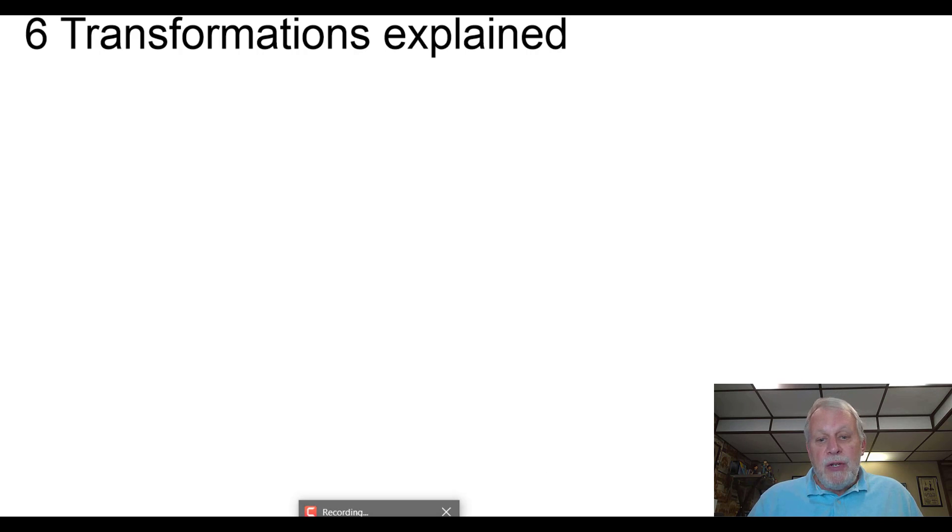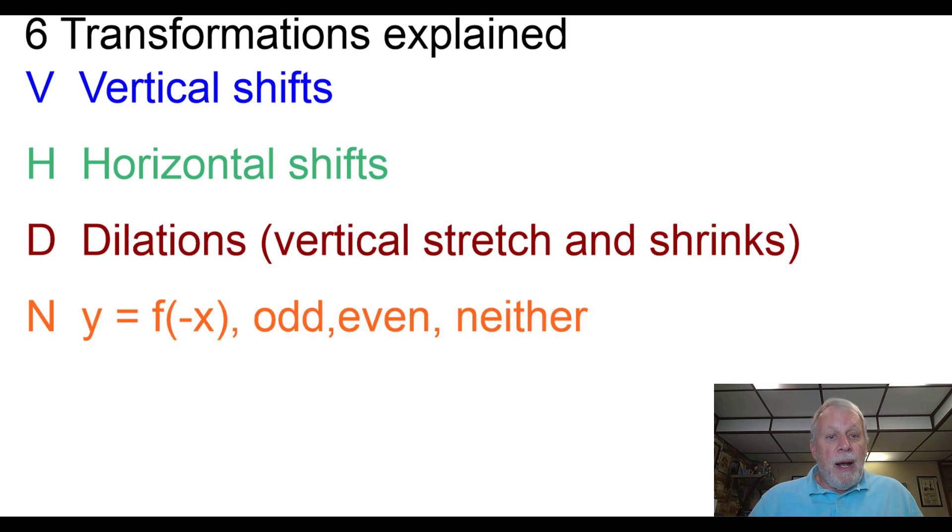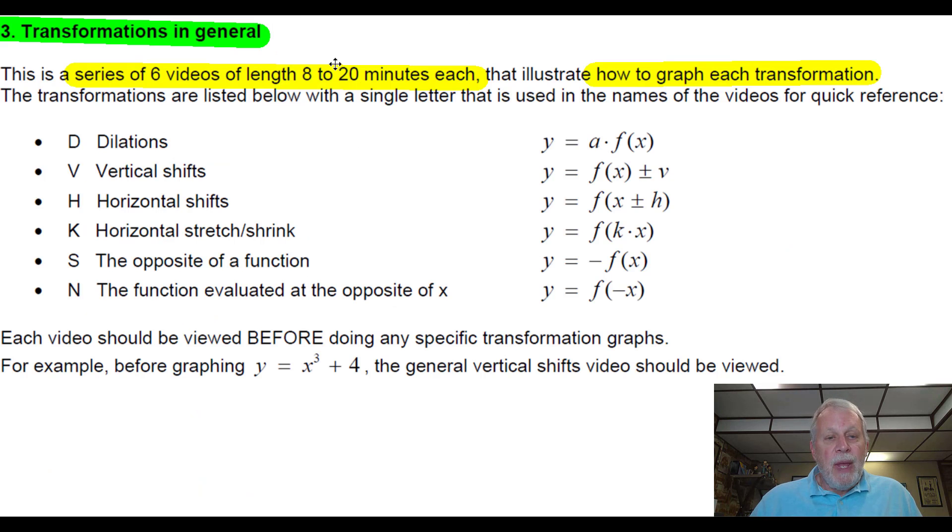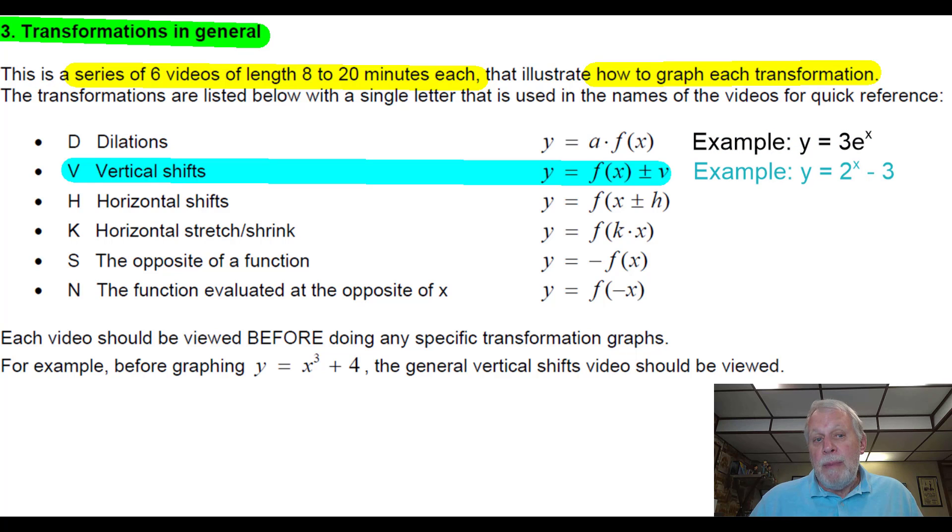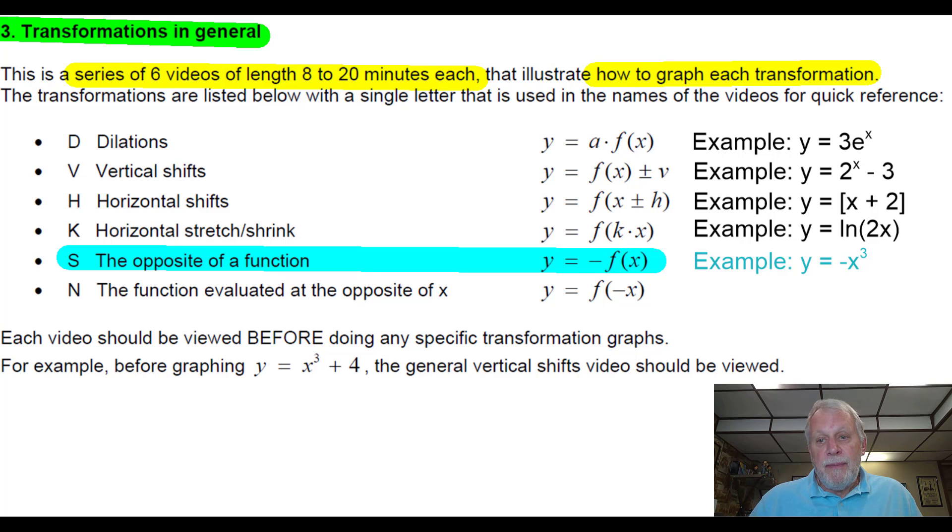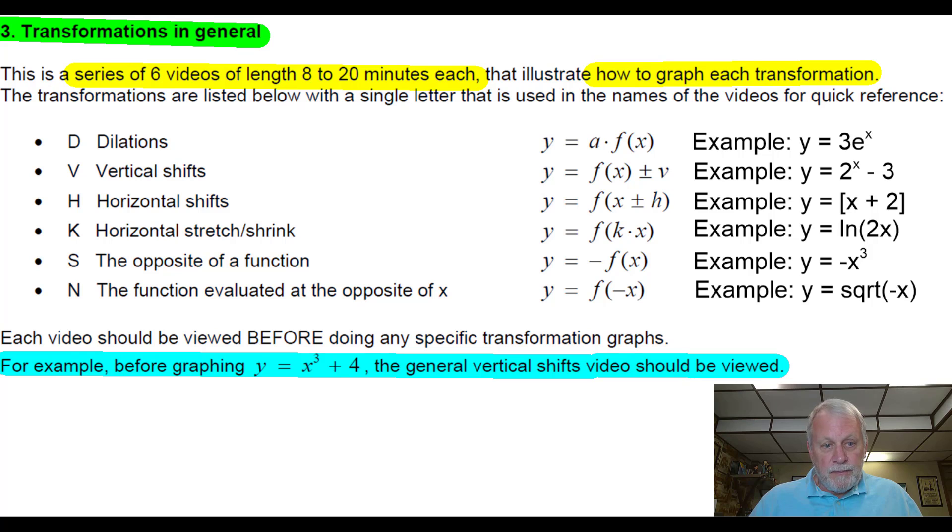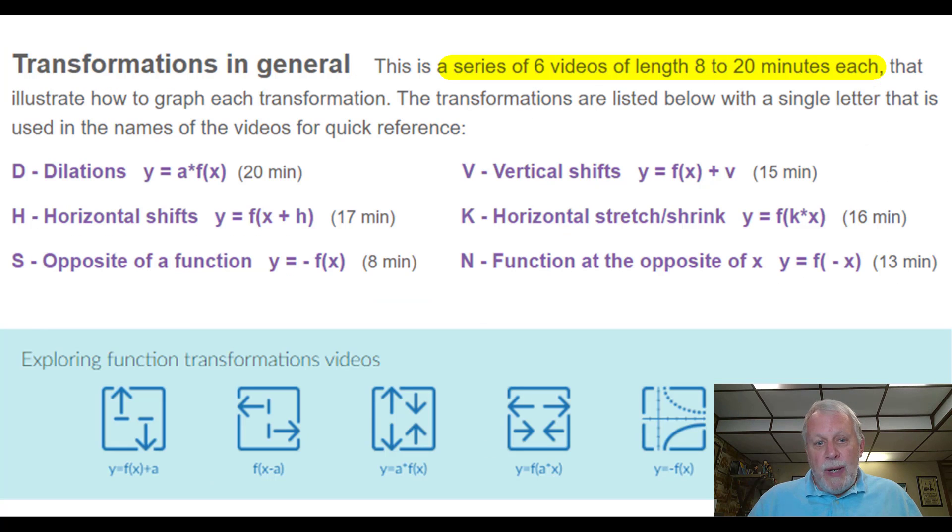There are videos of the six transformations. And they're explained. The vertical shifts, horizontal shifts, dilations, f of the opposite of x to see if a function is odd, even, or neither. Opposite of a function and horizontal compressions and expansions. And then we also have combinations of those. Those are 8 to 20 minutes each. They show how to graph that particular transformation. And here's examples of what we mean by these particular transformations. Each video should be viewed before doing any specific transformation. So if you're going to be doing a horizontal transformation shift, you better watch this video first to show generically how that's accomplished. So there's the six videos, 8 to 20 minutes. These are what they look like. They're on each parent function page so that if you need a quick review, they're right there.